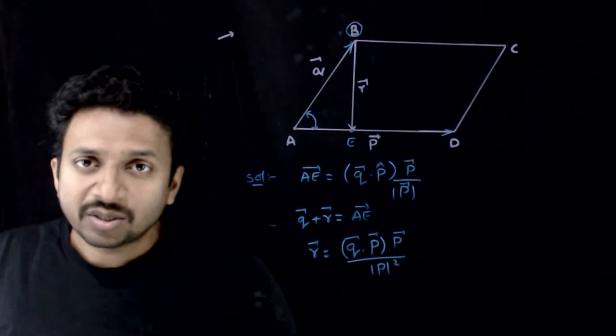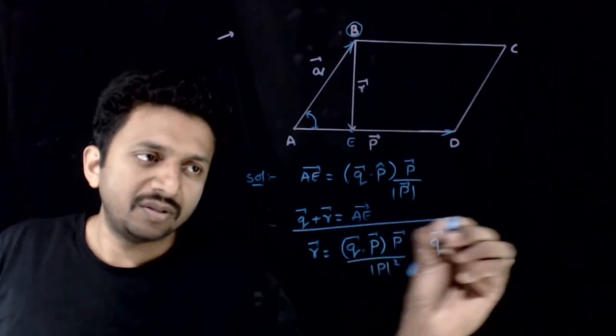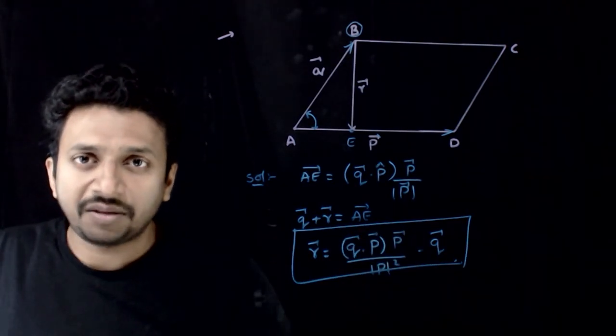You have 2 mod P bar, so mod P bar whole square minus Q bar. So this will be the expression for the vector R bar. Thank you.